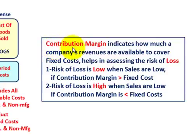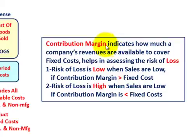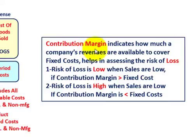The contribution margin indicates how much of a company's revenues are available to cover fixed costs. The risk of loss is low when sales are low if the contribution margin is greater than fixed costs; the risk is high when the contribution margin is less than fixed costs. The gross margin was a measure of competitiveness, while the contribution margin shows how well you're covering your fixed costs. That's the basic difference between gross margin and contribution margin, viewed through cost flows and the income statement.